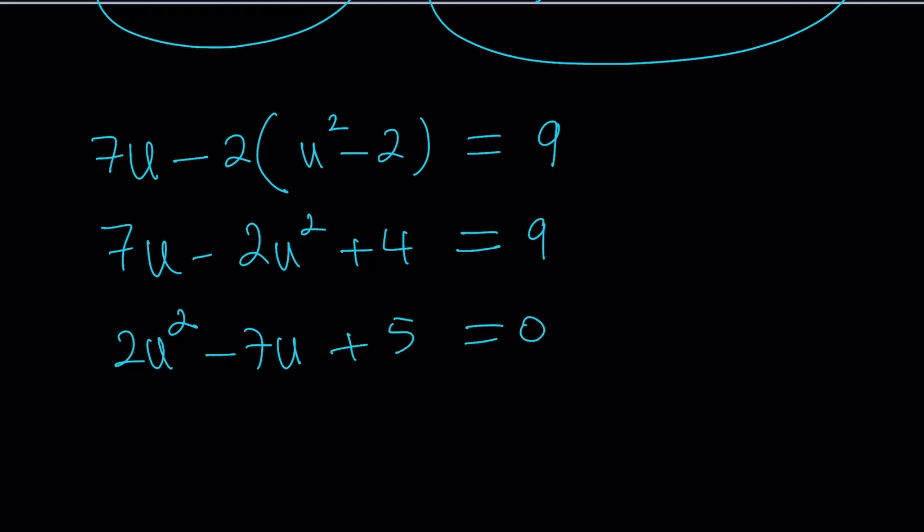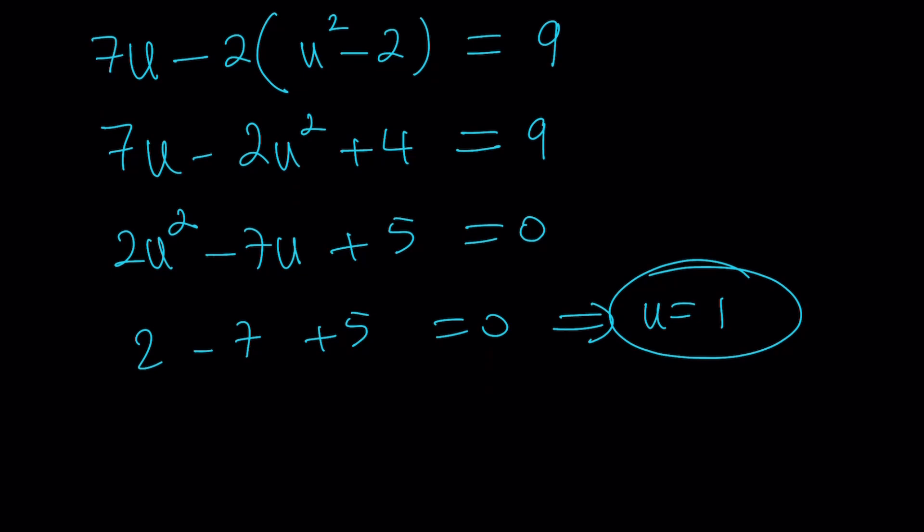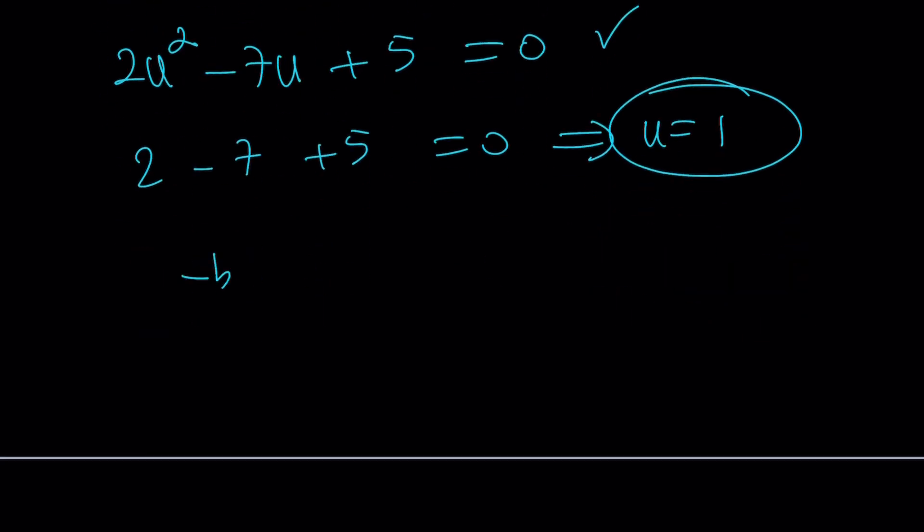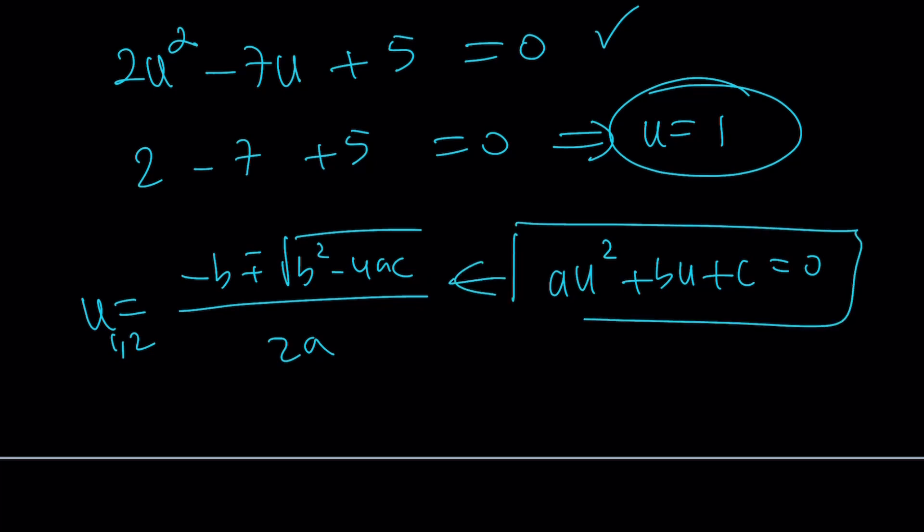What is one of the things, if you've seen my previous videos, you should know the answer to this question. What would you check if you have a polynomial equation first? The answer is sum of coefficients. And the sum of coefficients is 2 minus 7 plus 5 equals 0, which means u equals 1 is a solution. Awesome. Even if you didn't find that, you could solve it because this is quadratic. You hopefully know the quadratic formula. The quadratic formula is basically like negative b plus minus the square root of b squared minus 4ac over 2a. So if suppose you have au squared plus bu plus c equals 0, then this would be the u values. That's called the quadratic formula.